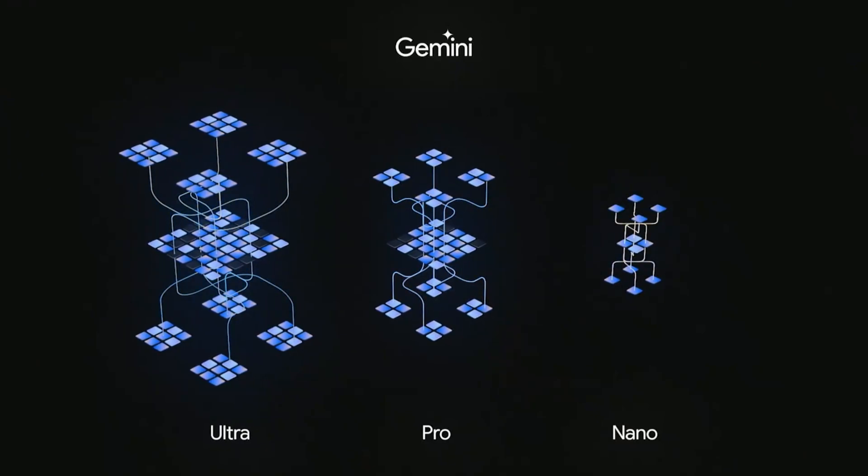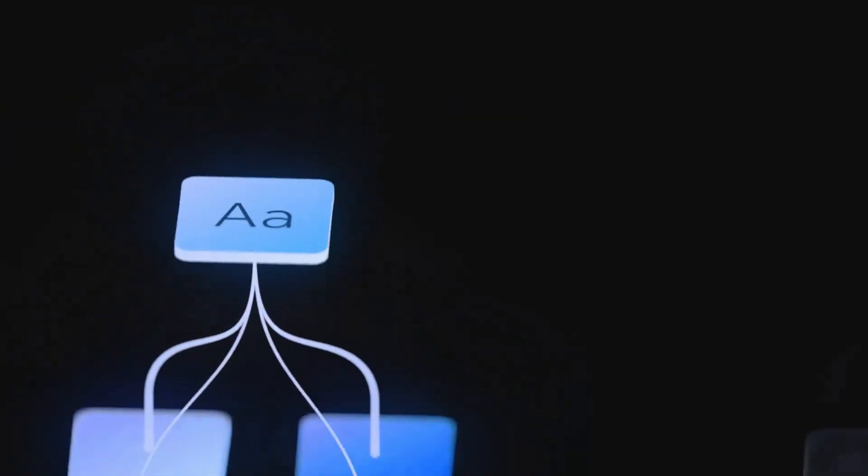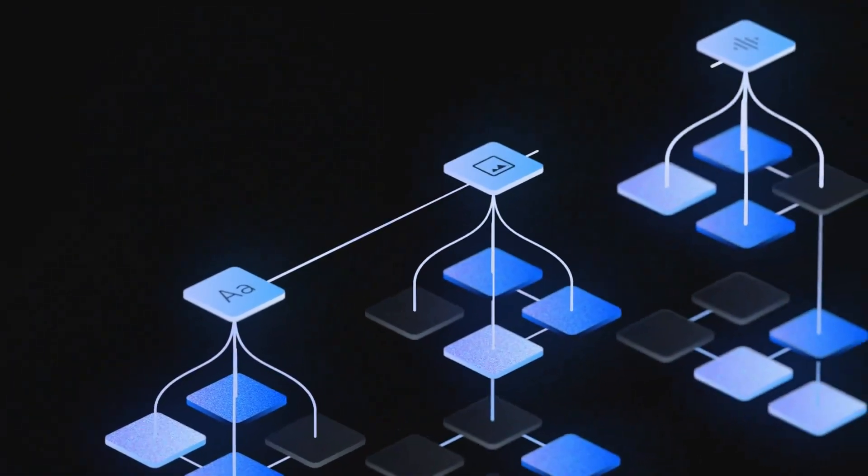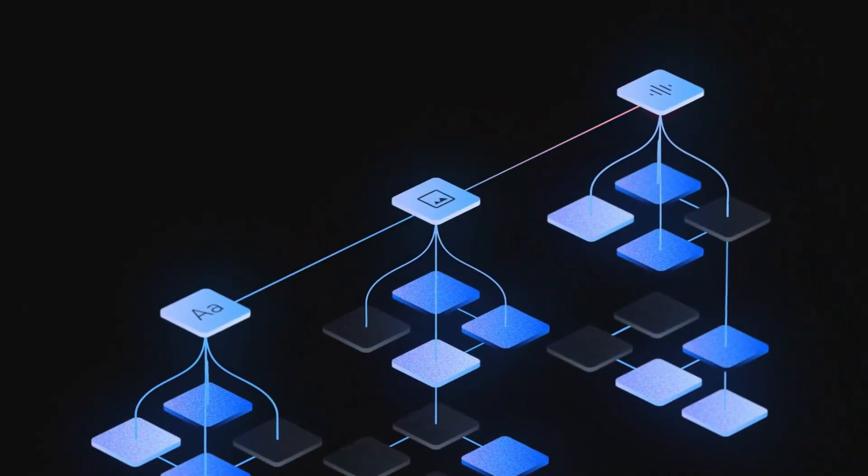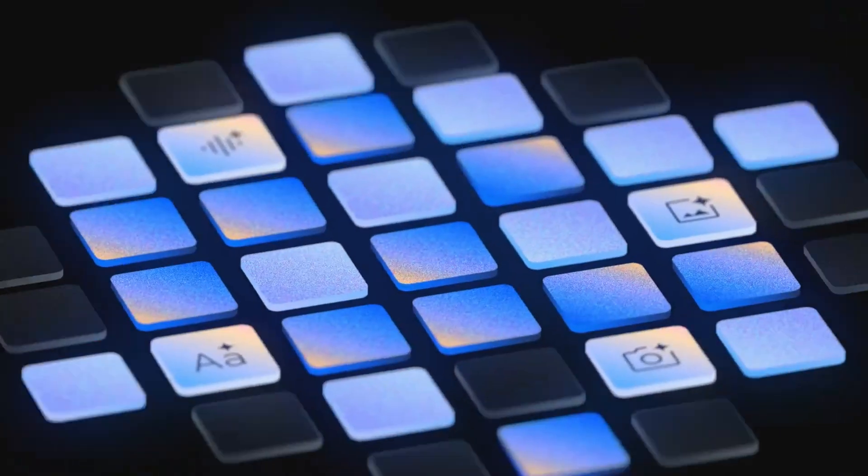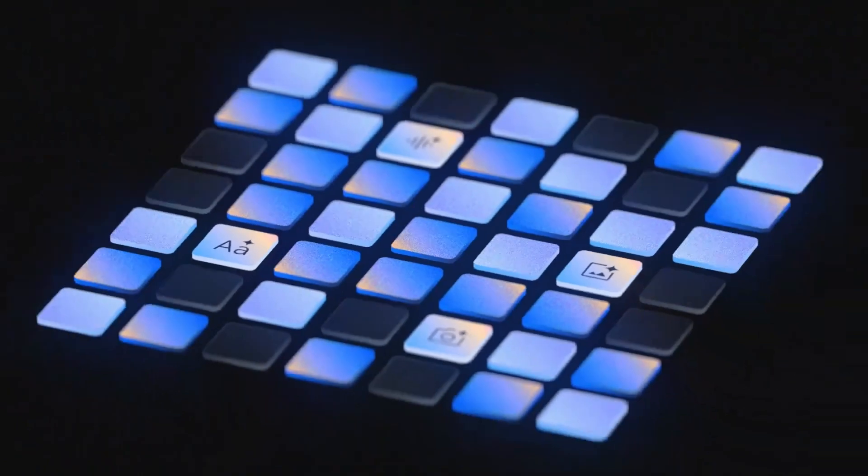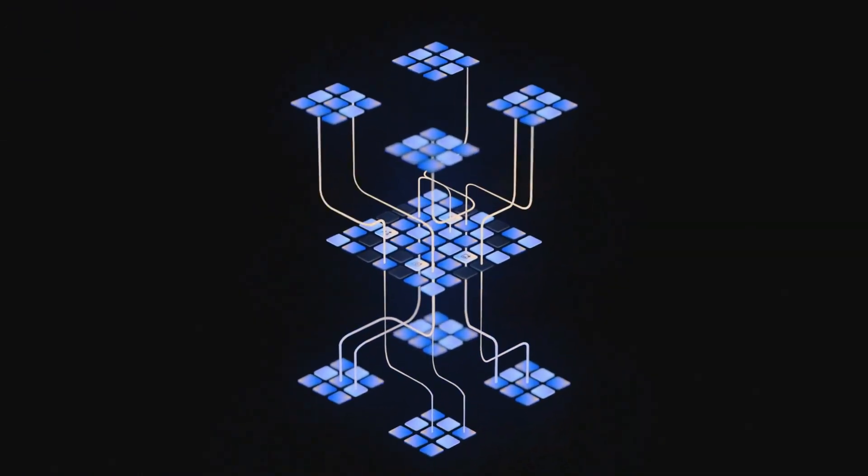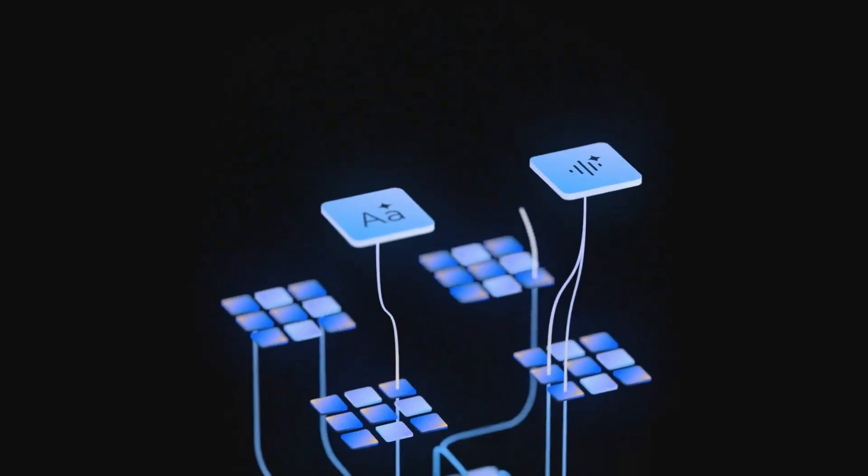Let's see what multimodal is. Multimodal models are created by stitching together text-only, vision-only and audio-only models in a suboptimal way at a secondary stage. Gemini is multimodal from the ground up, so it can seamlessly have a conversation across modalities and give you the best possible response.